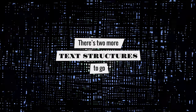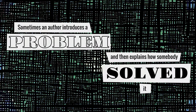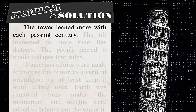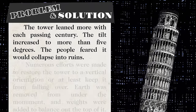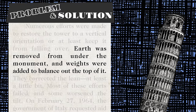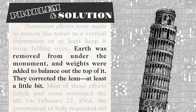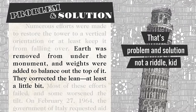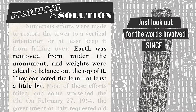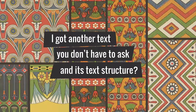If you heard the hook you already know, there's two more text structures to go. Sometimes an author introduces a problem and then explains how somebody solved it. 'The tower leaned more with each passing century; the tilt increased to more than 5 degrees. The people feared it would collapse into ruins.' Now we know the problem — what's the solution? 'Earth was removed from under the monument and weights were added to balance out the top of it. They corrected the lean at least a little bit.' That's problem and solution. Just look out for the words involved: since, question, problem, solution, and solve.